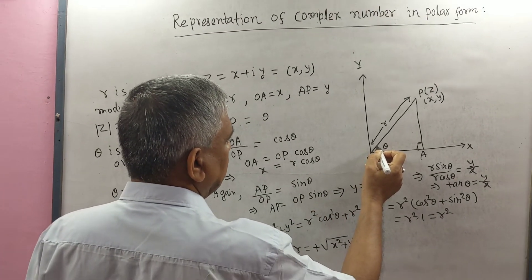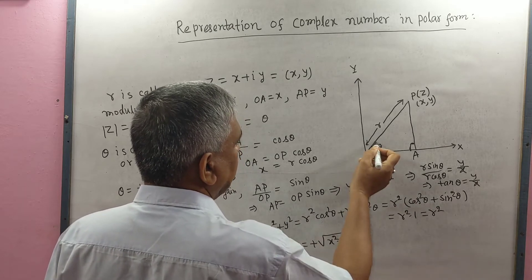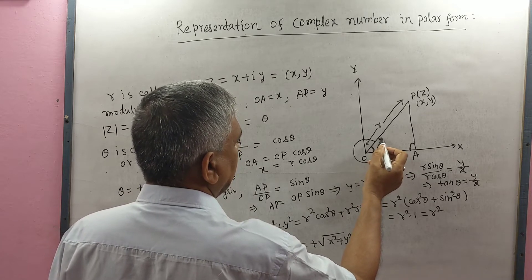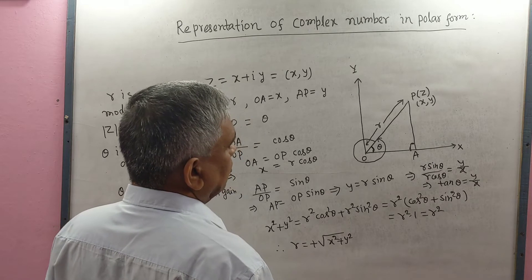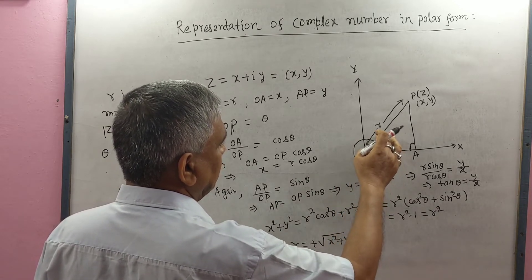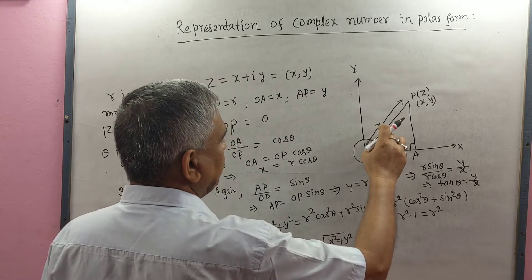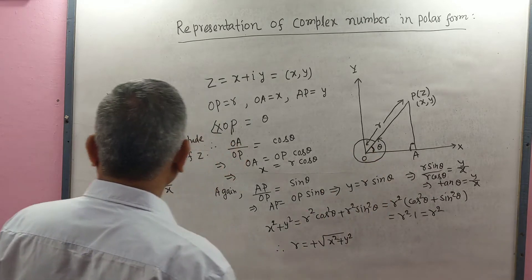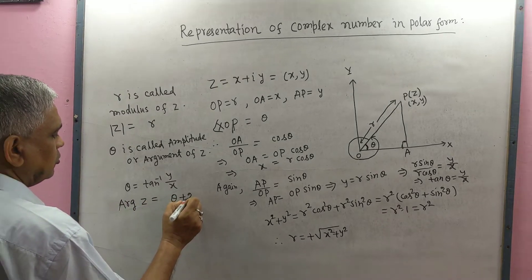This angle is θ — OP makes angle θ with the x-axis. If we go in the anti-clockwise direction and return to the same position of OP, the movement is 2π. So the argument may be written as arg(z) = θ + 2nπ, where n = 1, 2, …